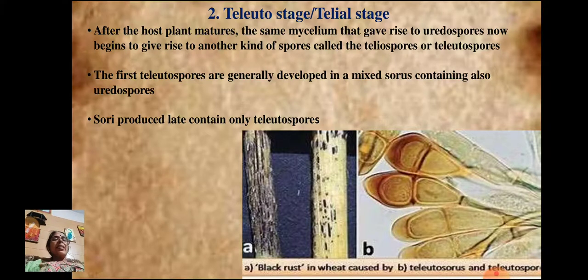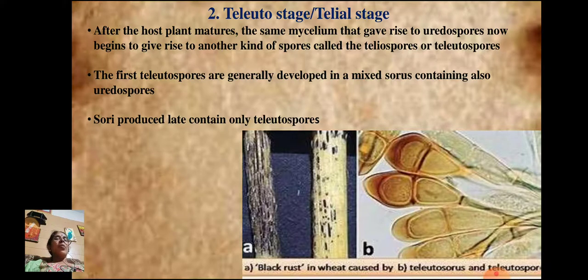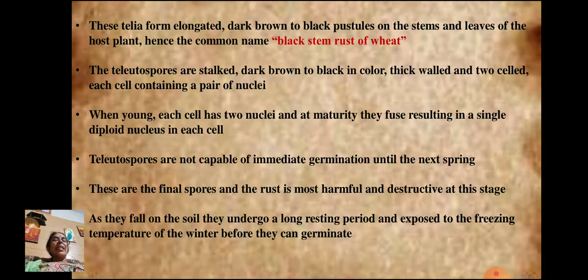The next stage is the telial stage. After the host plant matures, the same mycelium that gave rise to uredospores starts producing another kind of spore called teliospores. The first teliospores are generally developed in a mixed sorus containing both uredospores and teliospores, but later the sorus contains only teliospores. These telia form elongated dark-brown to black lesions on the stems and leaves of the host plant, hence the common name 'black stem rust of wheat.'